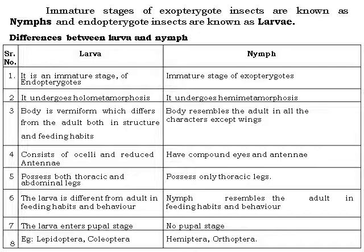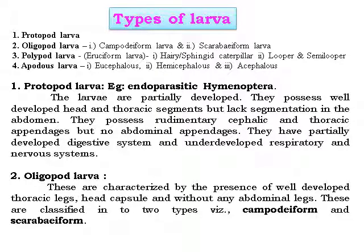This is the basic difference between larva and nymph, which may be asked in examination, so remember all these differential facts. The types of larvae are: first, protopod larvae; second, oligopod larvae, which has subtypes — campodeiform and scarabaeiform; third, polypod larvae, which includes eruciform larvae such as the spined caterpillar, looper, and semilooper; and fourth, apodous larvae, classified as eucephalous, hemicephalous, and acephalous.